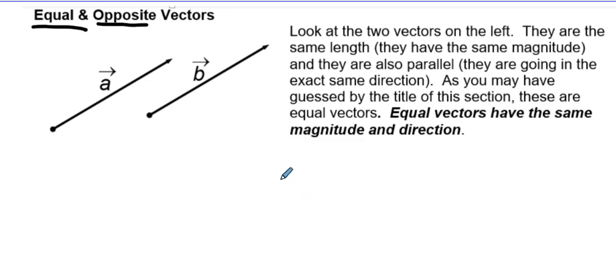So you may have guessed by the title of this section, these are equal vectors. Equal vectors have the same magnitude and direction. They have to be identical. They just might be written in a different spot on your page, but they have to be identical otherwise.